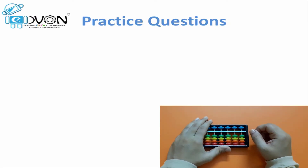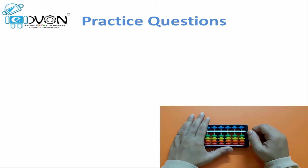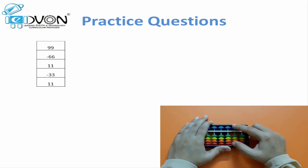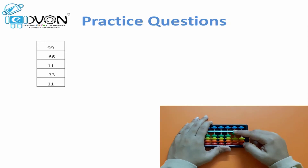Let's practice a few more questions of similar values. Now we will be doing questions much faster. First question: 99 minus 66 plus 11 minus 33 plus 11. Answer: 22.